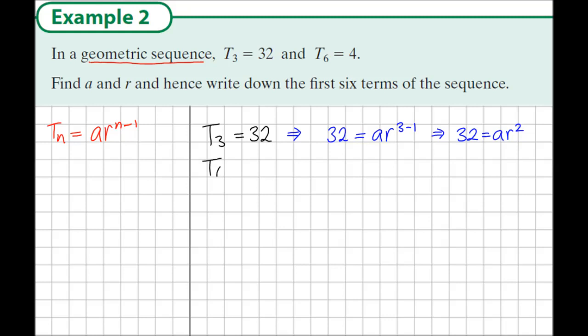We are also given that term 6 is equal to 4. Again, applying the formula where term 6 equals 4, that tells us 4 = a·r^(6-1). So 4 = a·r^5.